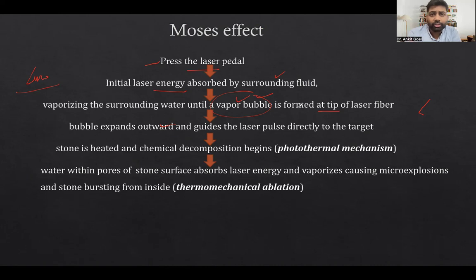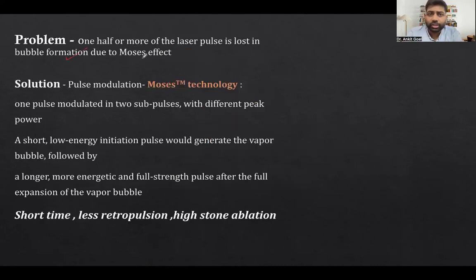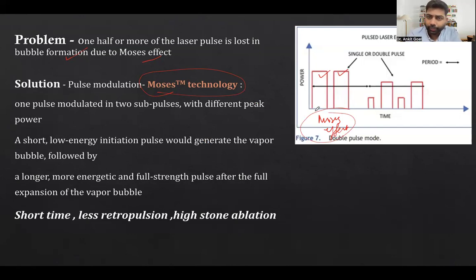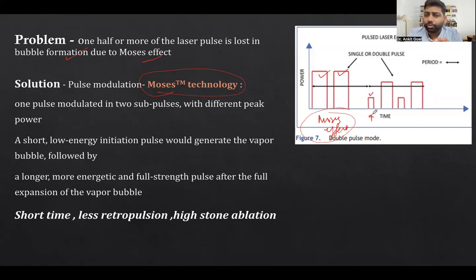The solution to the Moses effect is Moses technology, which works by the principle of pulse modulation. With a single pulse, only half of the energy reaches the stone — the rest is wasted creating the water bubble path. Moses technology addresses this by first delivering a small low-energy initiation pulse that generates the water vapor bubble and creates the path to the stone, so that by the time you generate the second pulse — a longer, more energetic, full-strength pulse — it can be transmitted efficiently.